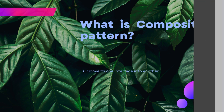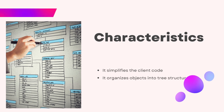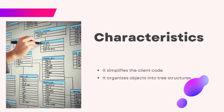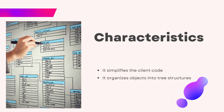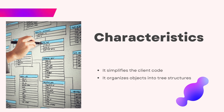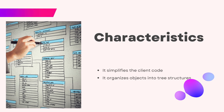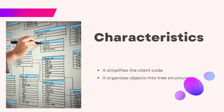Let's talk about the characteristics. The composite pattern has distinguishing characteristics. Primarily, it simplifies the client code by allowing interaction with individual objects and compositions in a uniform manner — just like you would care for the tree, not for each leaf individually. Secondly, it organizes objects into tree structures to represent part-whole hierarchies, much like a tree itself is composed of branches, which are themselves composed of smaller branches and leaves.